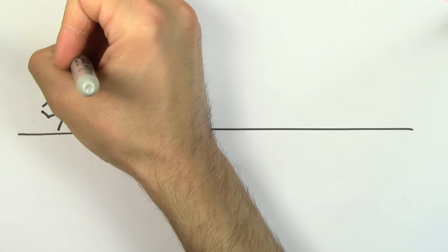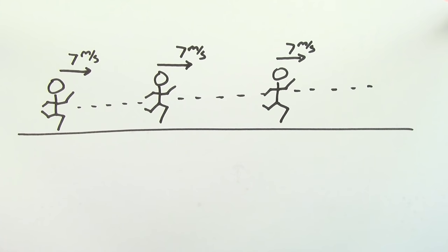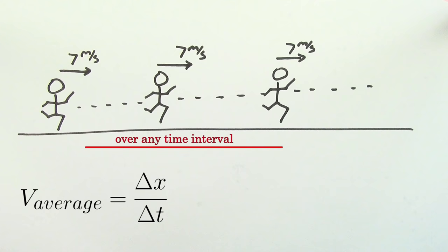The first way is so simple that it's kind of obvious. If you're lucky enough to have a case where the velocity of an object doesn't change, then the formula for average velocity is just going to give you the same number as the instantaneous velocity at any point in time.